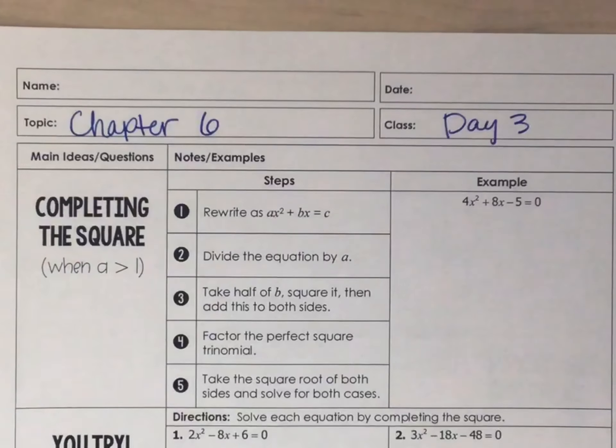And step 5 is to take the square root and solve for both the positive and negative case. So we'll take the square root of both sides. We have x plus 1 equals square root of 9 is 3, square root of 4 is 2, and that's a plus or minus. So we want to set up our two options. Either I have x plus 1 equals 3 over 2, or I have x plus 1 equals negative 3 over 2.